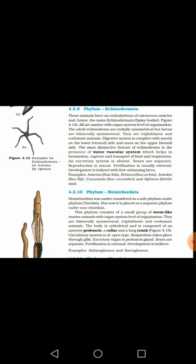The digestive system is complete, meaning they have two openings — one is the mouth and one is the anus. The mouth is on the lower ventral side and the anus is on the upper dorsal side. So they have a complete digestive system.